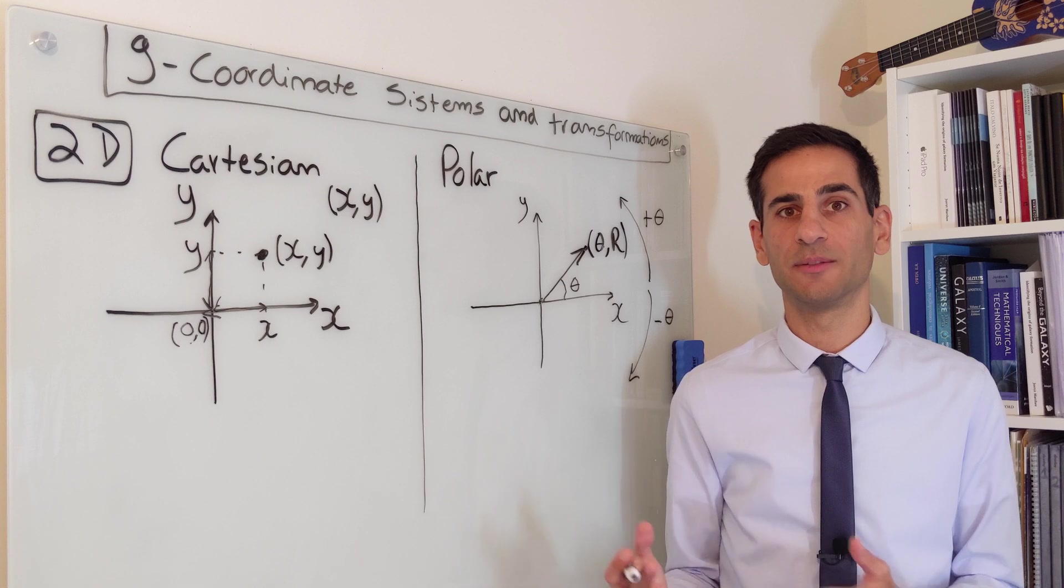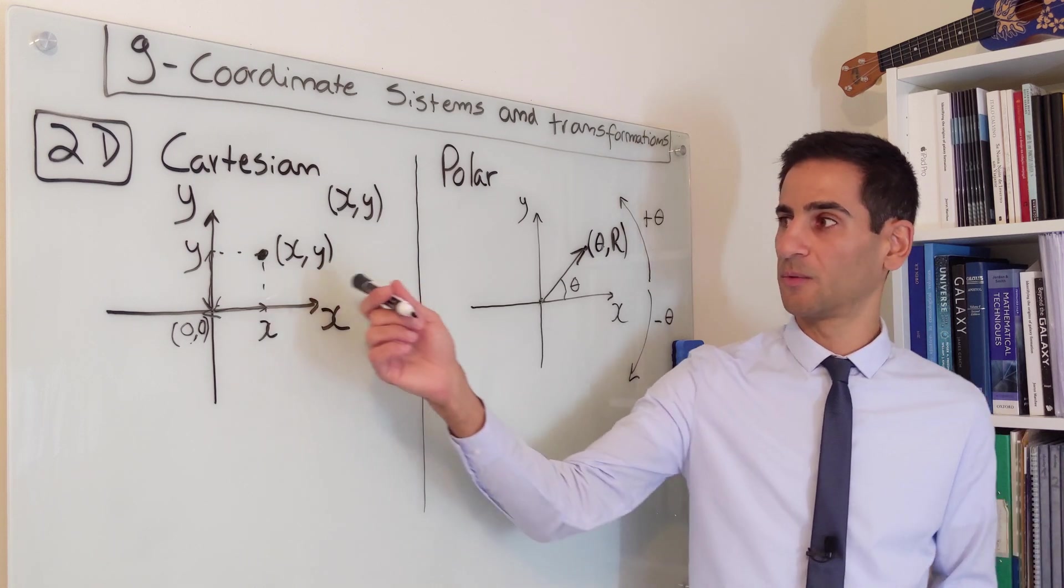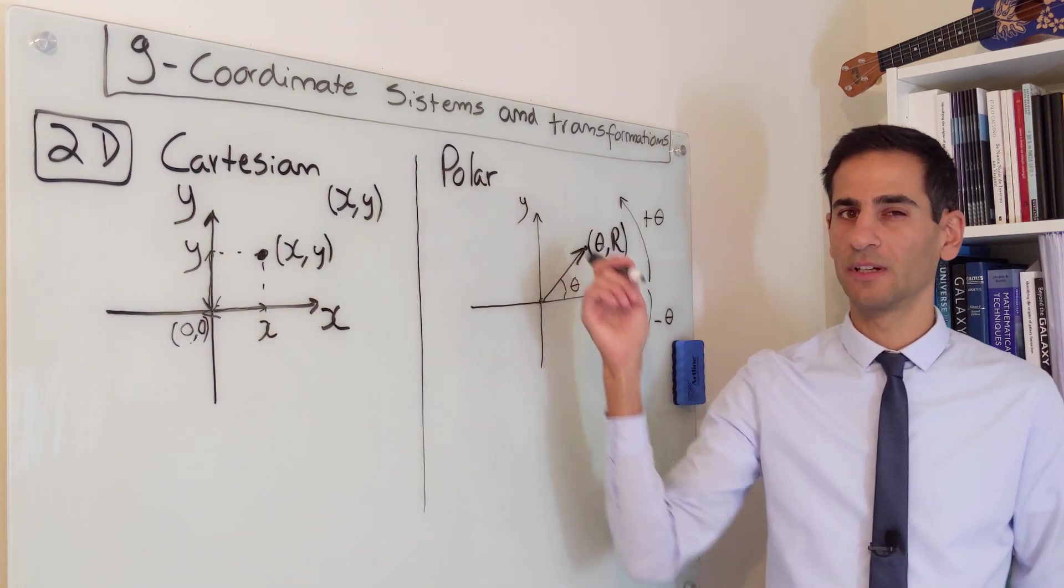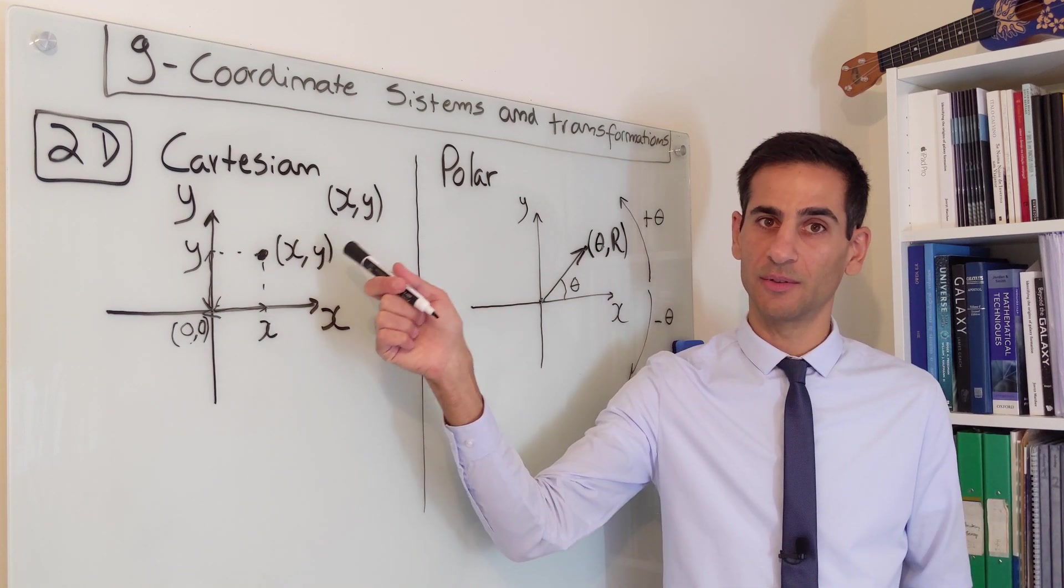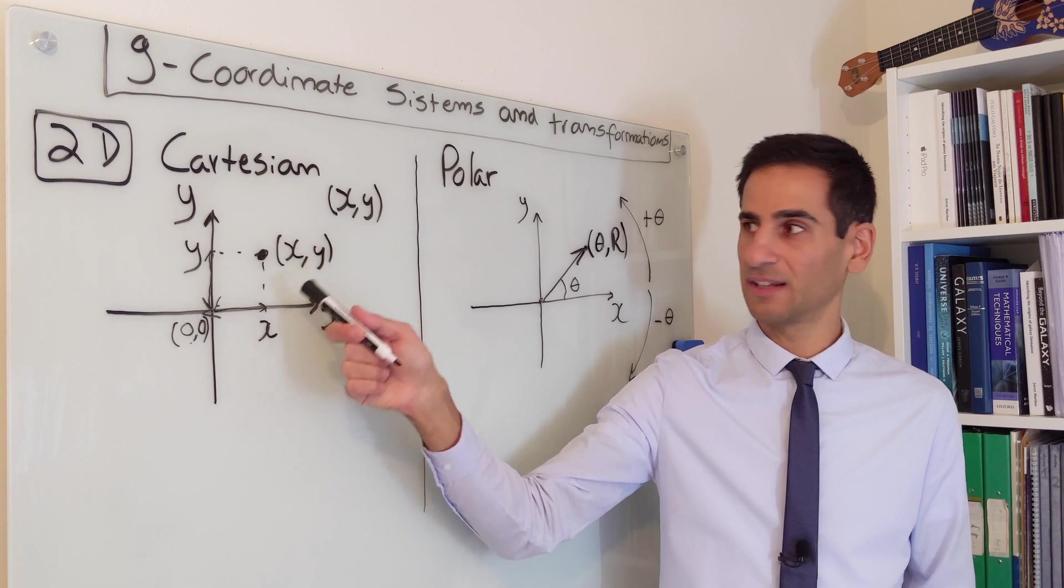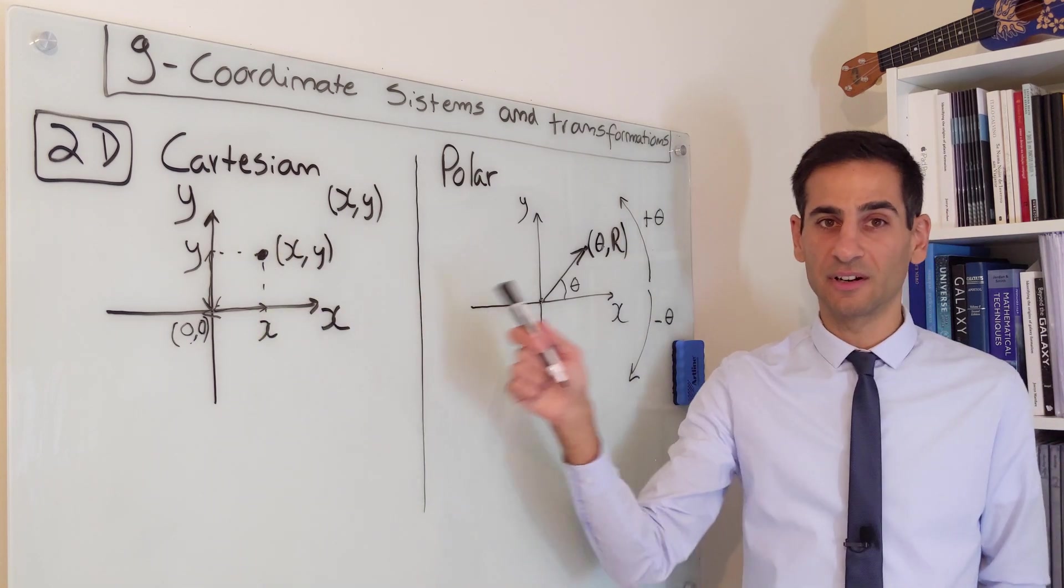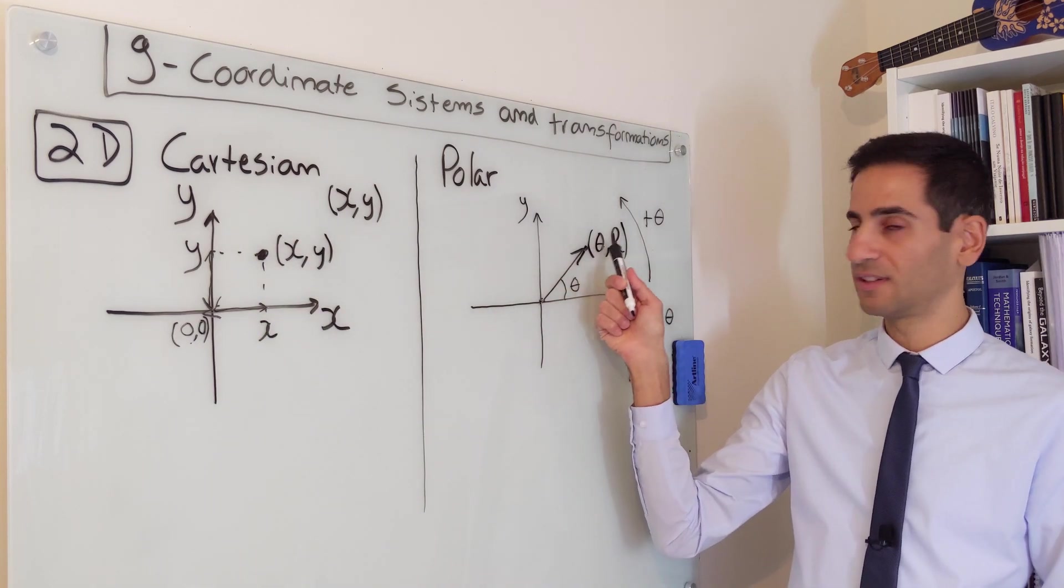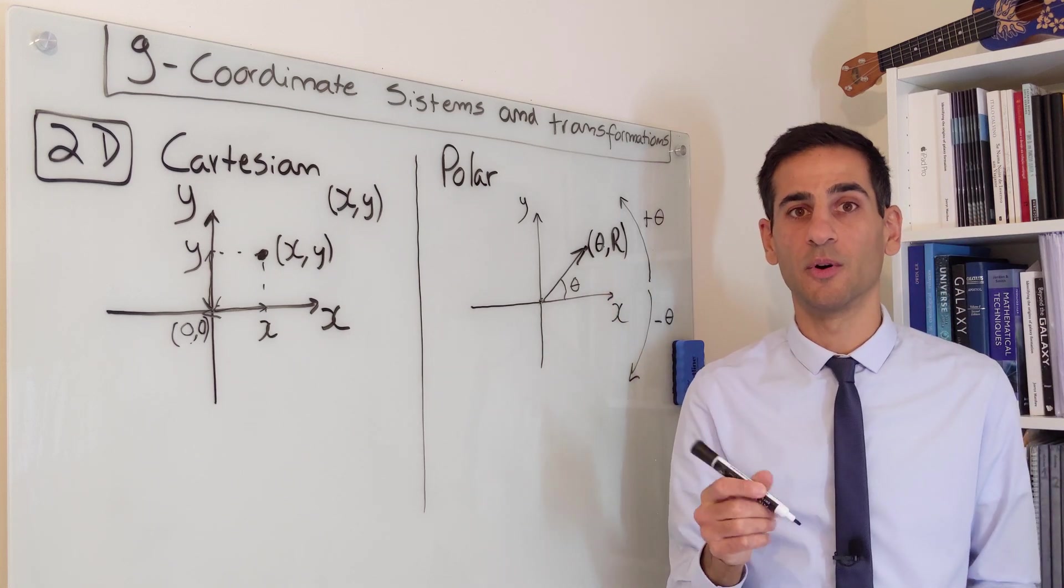And also that we really need to be careful when we convert things from Cartesian to polar. There's only one way to write down a point in Cartesian. There's only one x and y that describes this point. But there are many combinations of theta and r that describe exactly the same point.